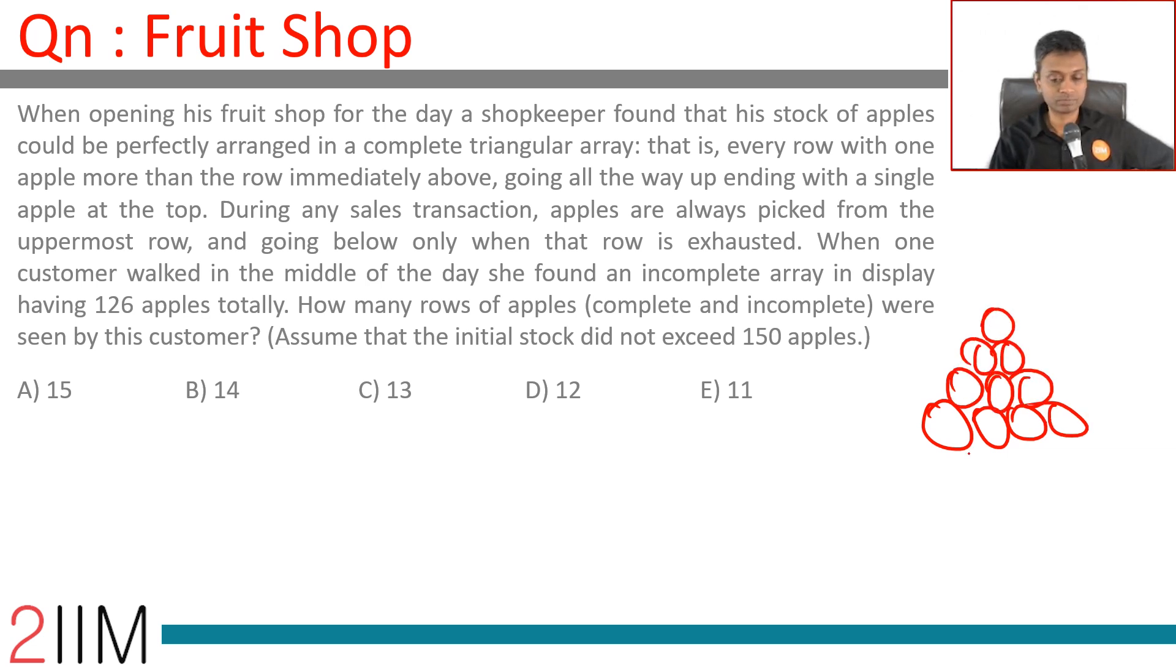You had one more row that will have one, two, three, four, five, and so on. During any sales transaction, apples are always picked from the uppermost row.